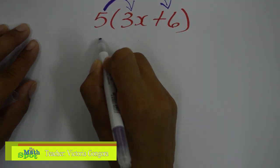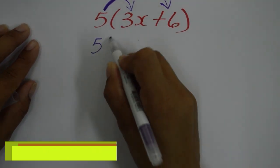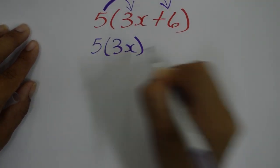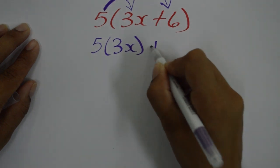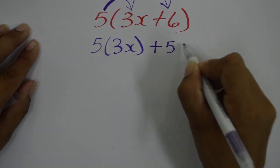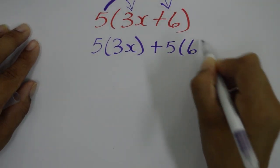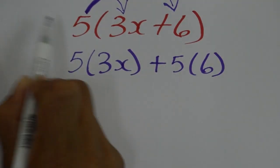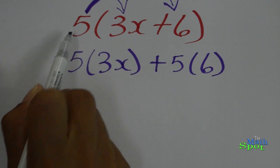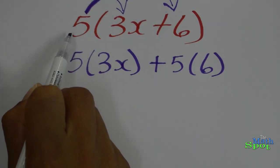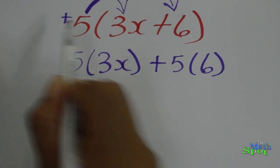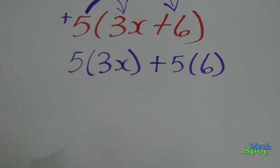So let me write that: 5 times 3x, and positive 5 times 6. Positive 5, because the term directly outside the bracket, 5, is a positive number, so we put plus.